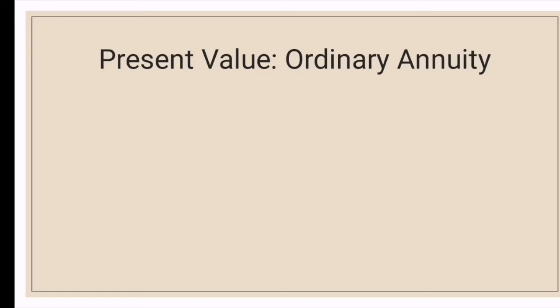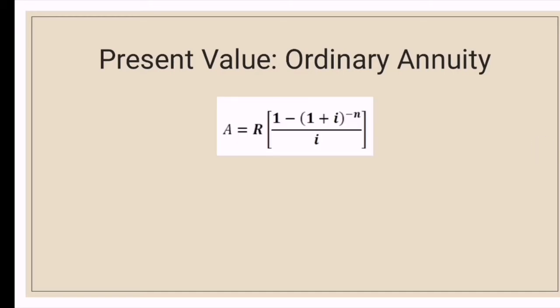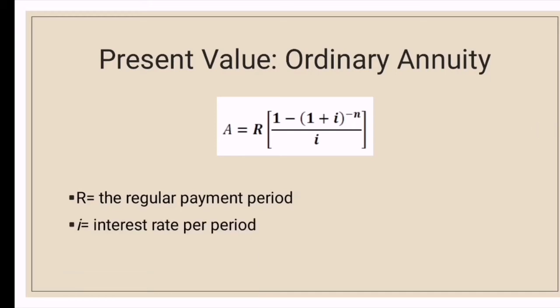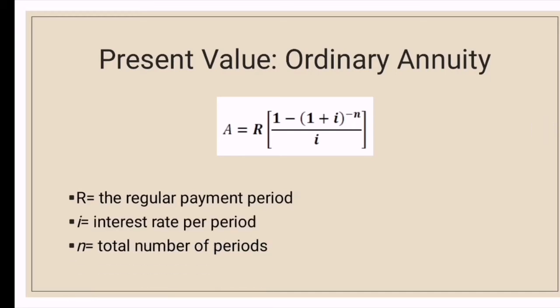So what does the present value of an ordinary annuity tell us? The present value calculation tells you how much money would be required now to produce a series of payments in the future. The present value for ordinary annuity is given by: A equals R times (1 minus (1 plus i) raised to the negative N) over i, where R is the regular payment per period, i is the interest rate per period, and N is the total number of periods.